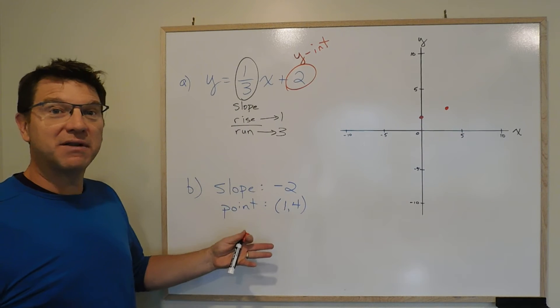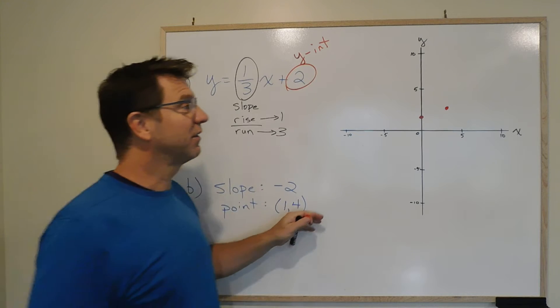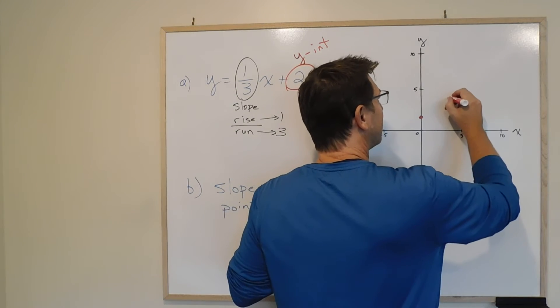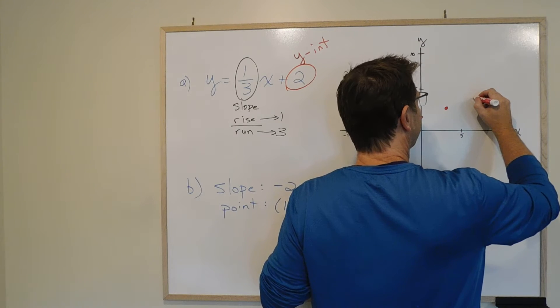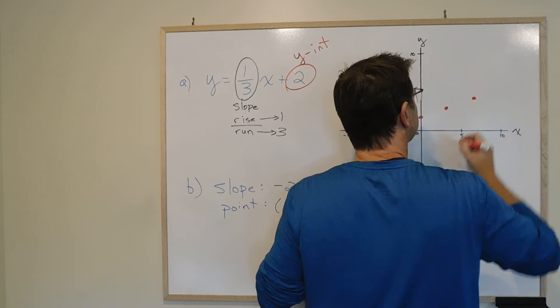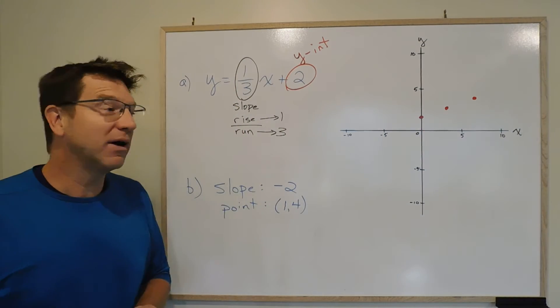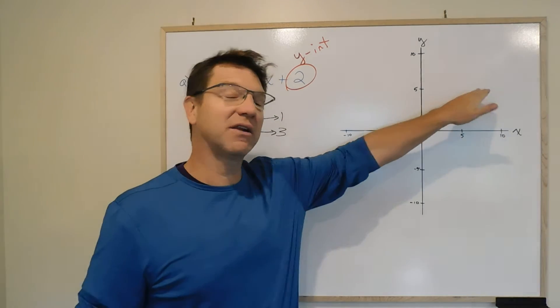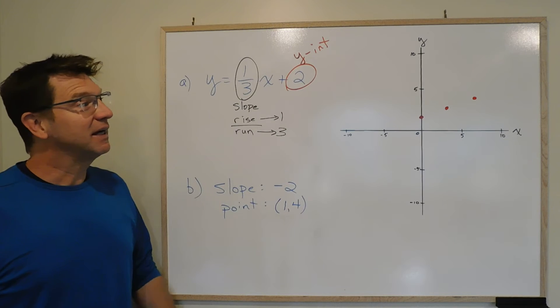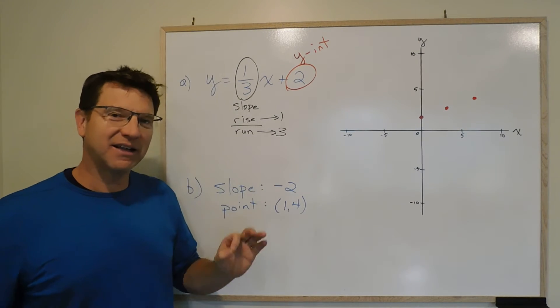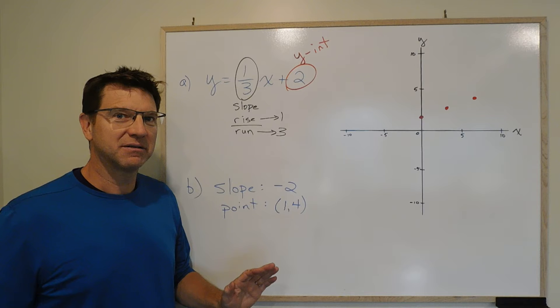And then we're going to repeat that process. Up 1 and over 3. So again, we're going to go up 1 and over 3. We'll be about right there. Now, why we want to do it twice is we want to generate 3 points. And why we want to generate 3 points is if those 3 points create a line, we likely have not made a mistake.